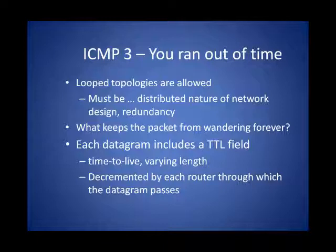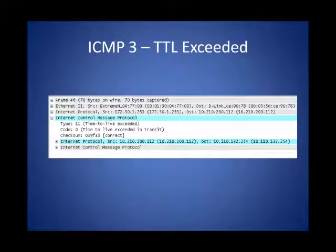Here's another ICMP error message called the time to live exceeded. Looped topologies are allowed for redundancy and failover, but if you create a logical loop where routers point back and forth to each other and there's no way for a packet to leave a portion of the topology, we have to have a way to eventually remove those packets. Every IP packet has a time to live field, and every time a packet crosses a router, that field is decremented by 1. When the time to live field goes down to 0, an ICMP time exceeded message is generated. This is our type 11 ICMP error message — time to live exceeded in transit — and a portion of the original datagram that triggered it is included in the packet.